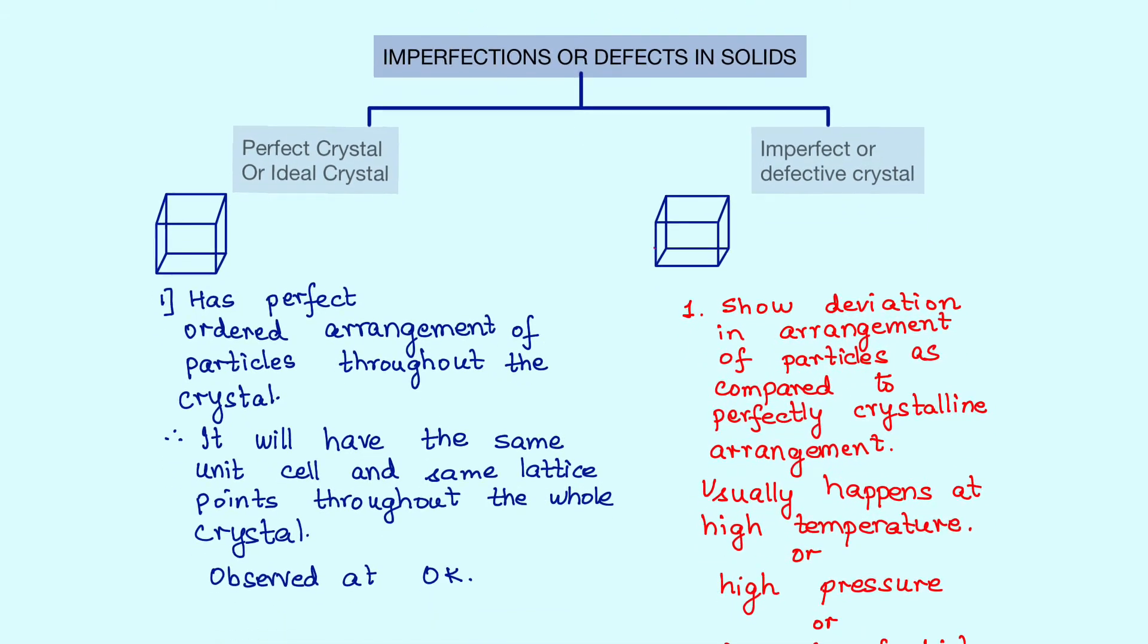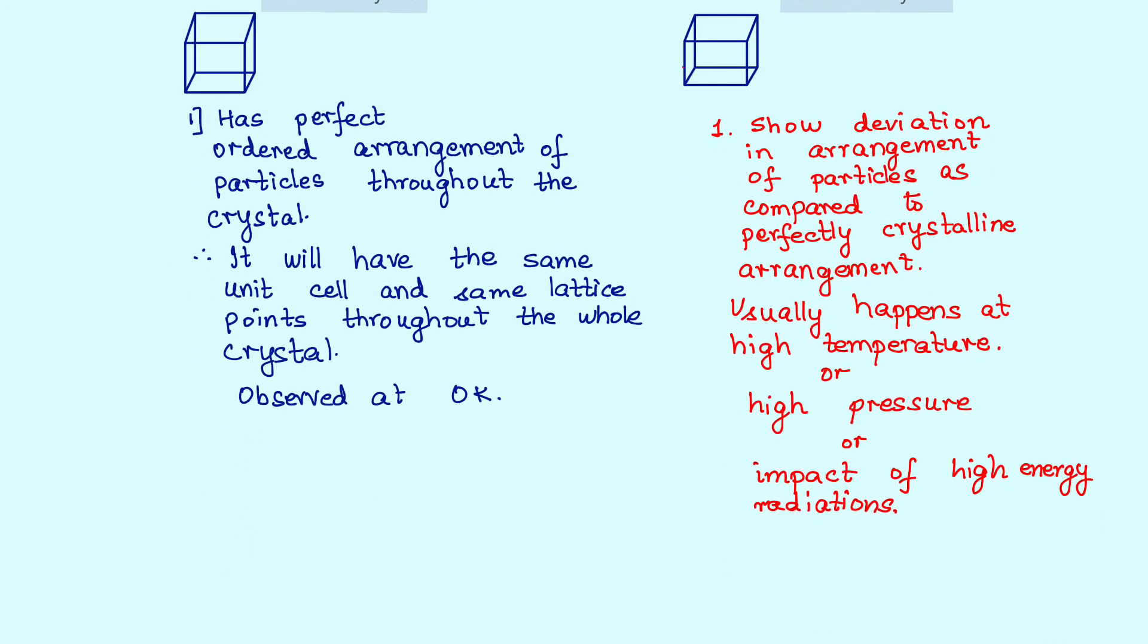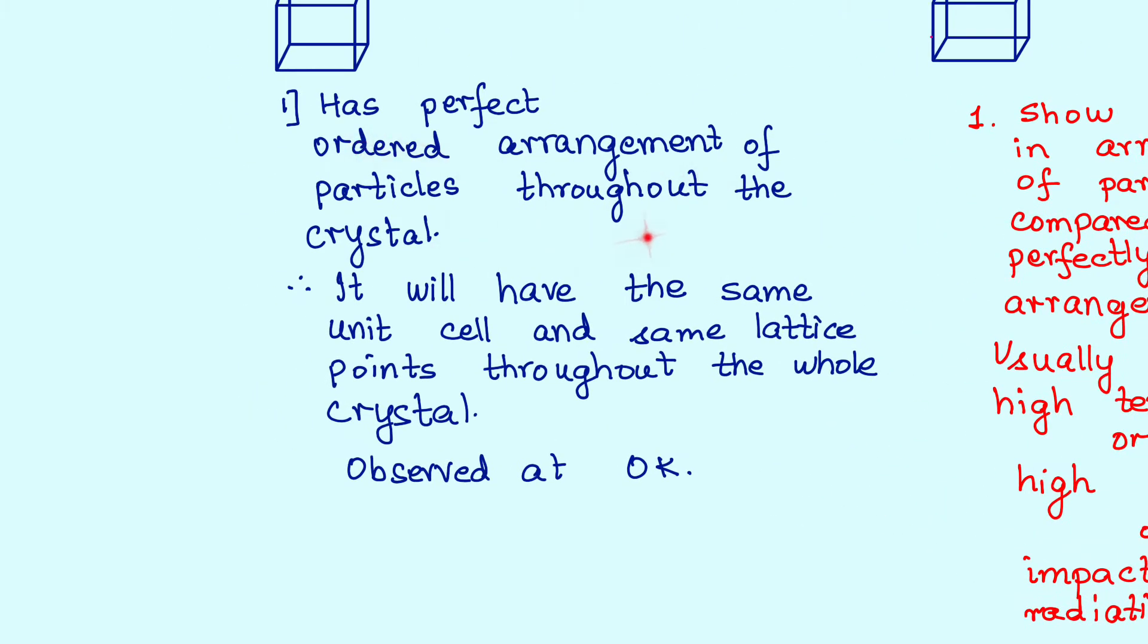Before we define what we mean by an imperfect or defective crystal, let us define what a perfect or ideal crystal is. How would you define an ideal person? Having all the qualities, very disciplined, truthful, honest and so many things. So when we talk about the perfect crystal, that means a perfect crystal has a fixed or ordered arrangement of particles throughout its crystal. It follows the same pattern throughout. It will have the same unit cell, same lattice points throughout the whole crystal. Just like ideal people are very, very rare to find.